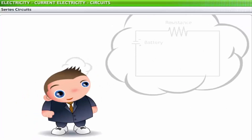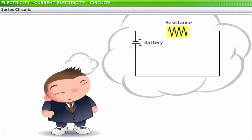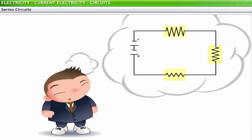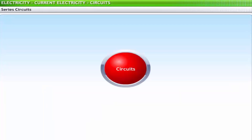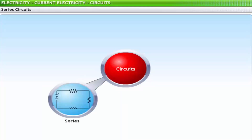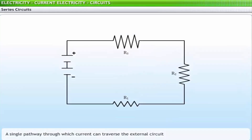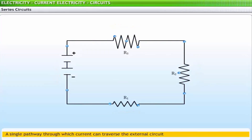Circuits that consist of just one battery and one load resistance are very simple to analyze, but they are usually not found in practical applications. Most often, you find circuits with more than two components. You can connect the components in a circuit in two ways: in series and in parallel. In a series circuit, each device is connected such that there is only one pathway through which current can traverse the external circuit.